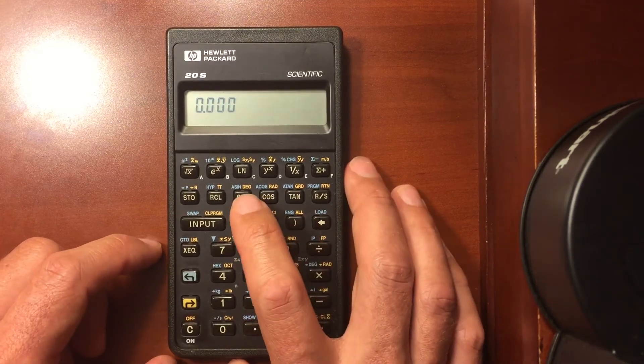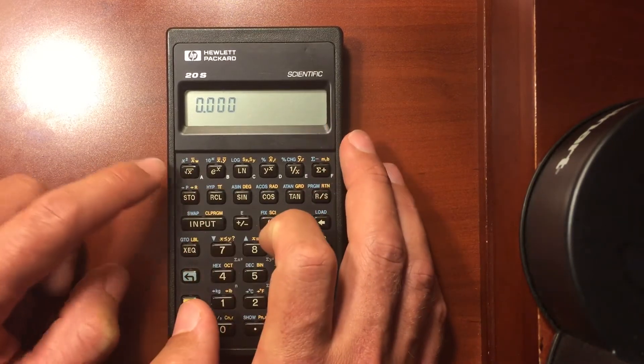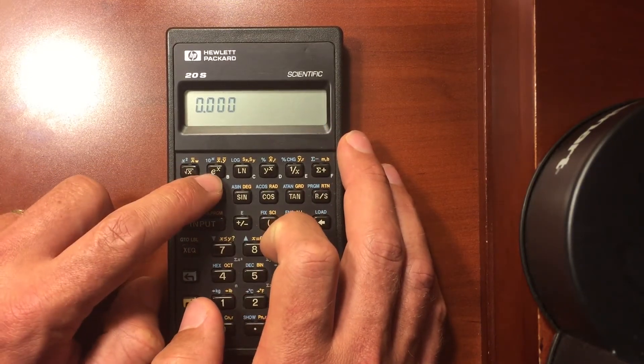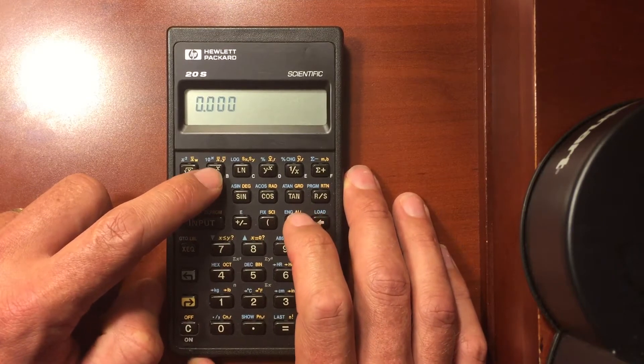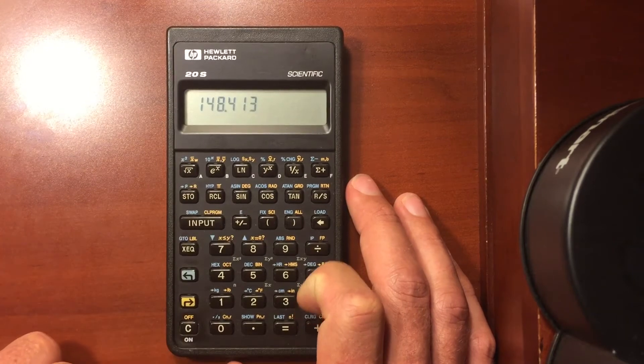You have your basic operations. Your square root. Square symbol. You have e to the x. x is just going to be whatever number you enter. And then e to that number.